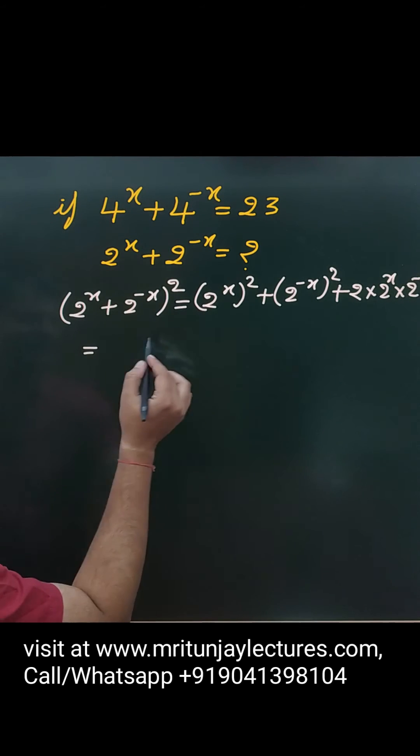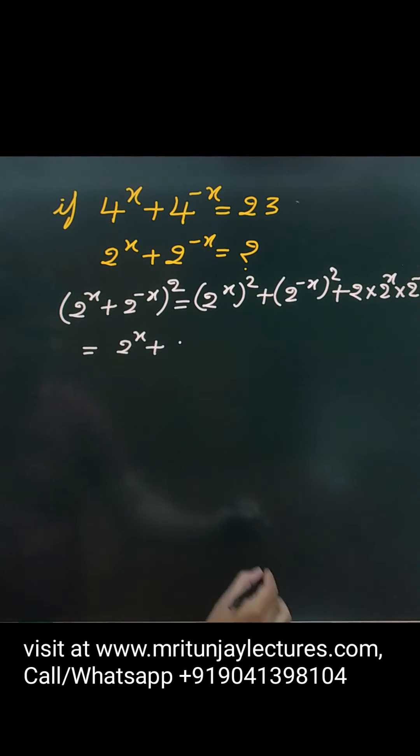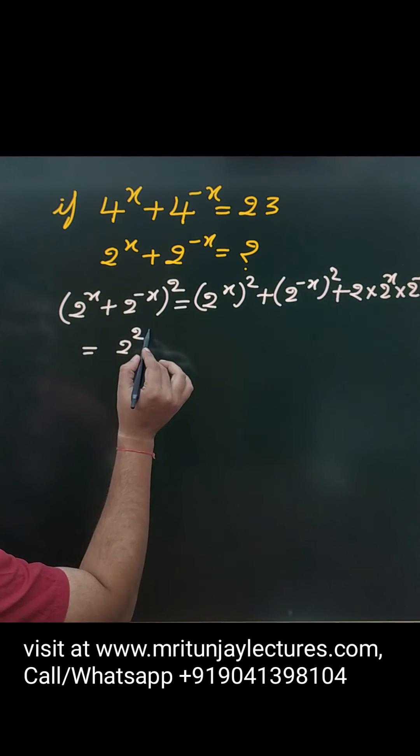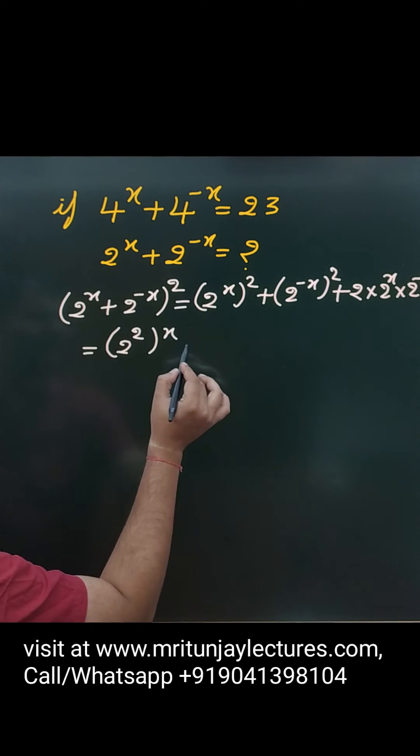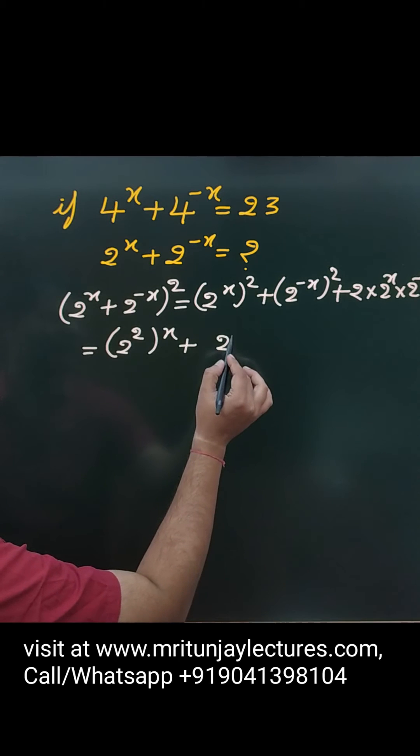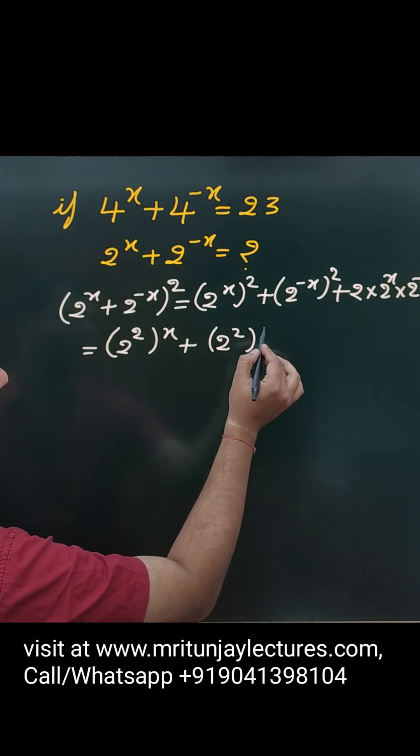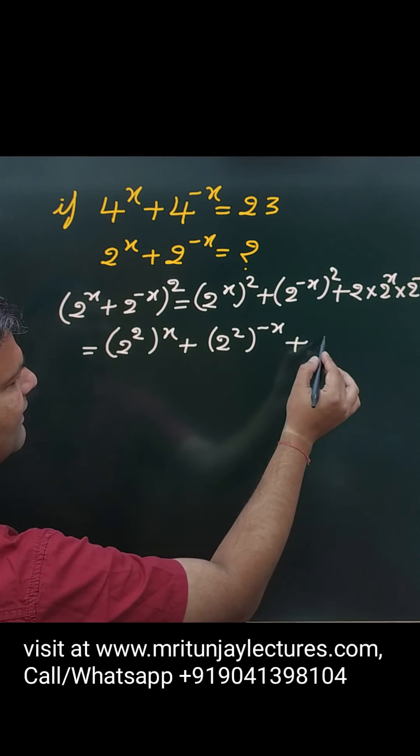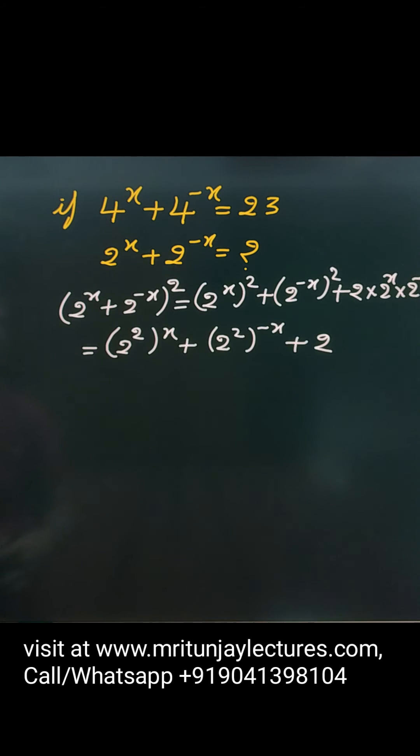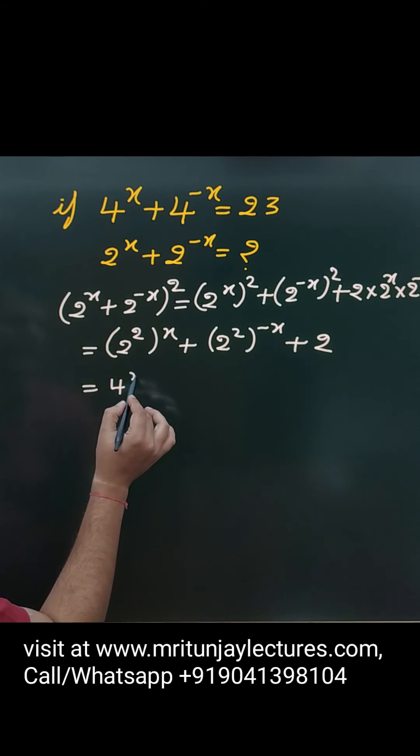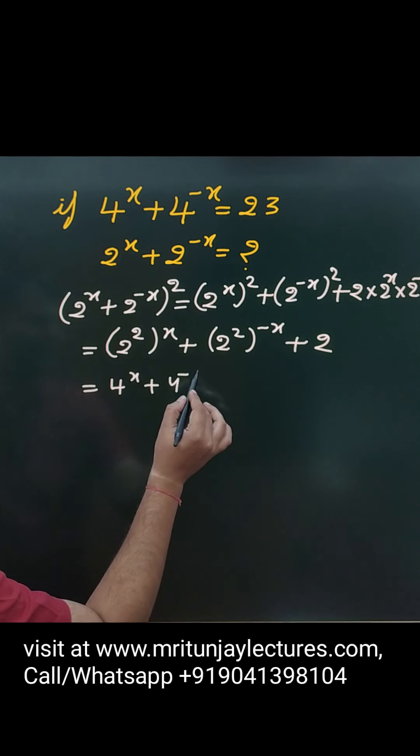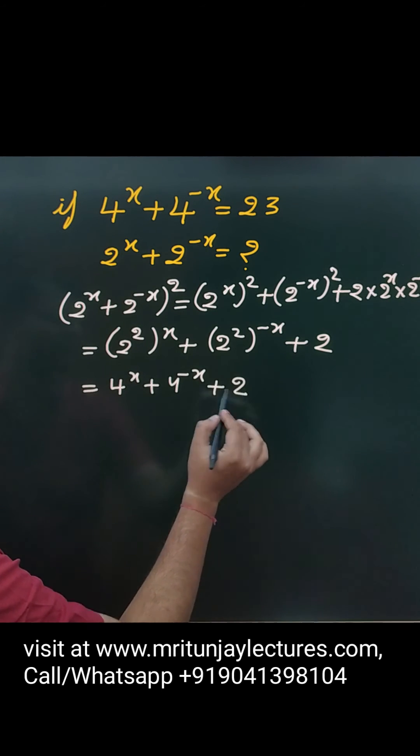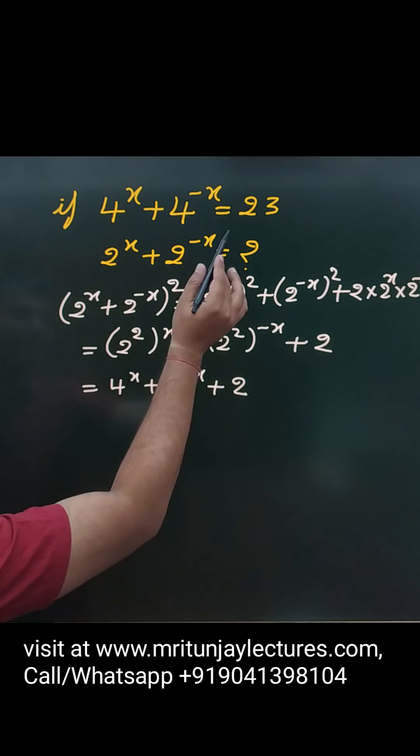After that, that is 2 to power 2x, and that one written like that one here. And that one is 2. So what about that value? Basically, it is 4 to power x and that is 4 to power minus x plus 2, and what about that value? That is 23.